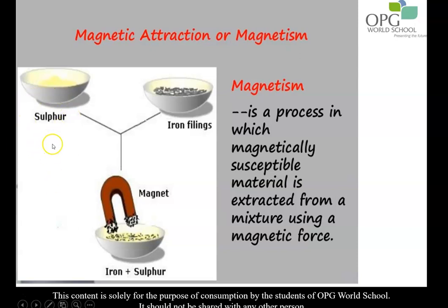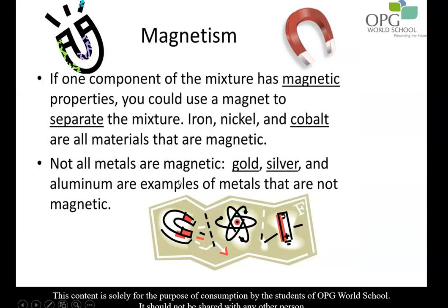This is a mixture containing sulfur and iron filings. Sulfur is a yellow-colored non-metal found in powder form, and these are the iron filings or small iron pieces. When we mix them together, they can easily be separated using a magnet, because the iron pieces will be attracted to the magnet but not sulfur, as sulfur is a non-magnetic material. So if one component of the mixture has a magnetic property, we can separate it from the mixture using a magnet.